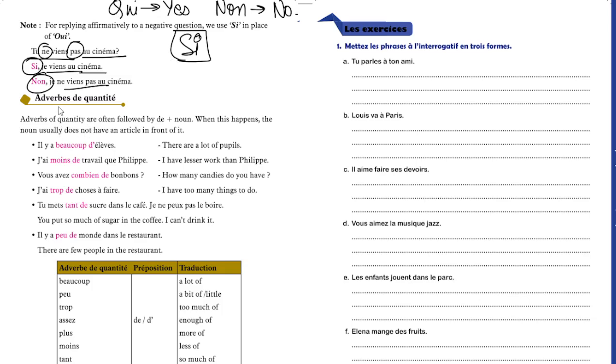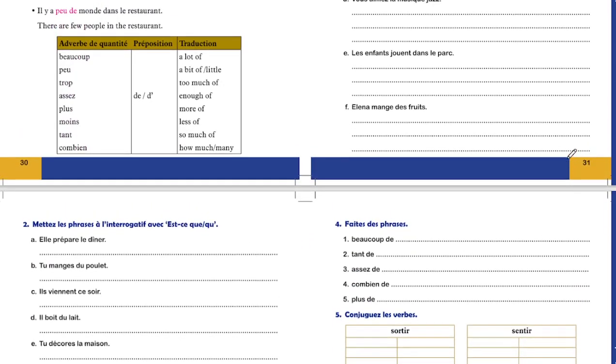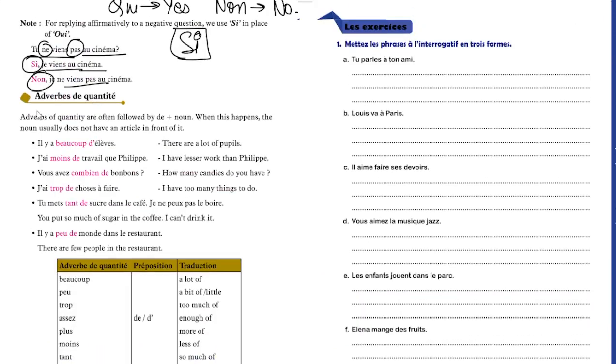Next is adverbs of quantity. Adverbs of quantity are followed by the noun in the ending. It usually does not have an article in front of it. Like beaucoup de, moins de, combien de, trop de, tant de, un peu de. Beaucoup de means a lot of. Un peu de is a bit. Trop de is too much of. Assez de is enough of. Plus de is more of. Moins de is less of. Tant de is so much of. Combien de is how much or how many.